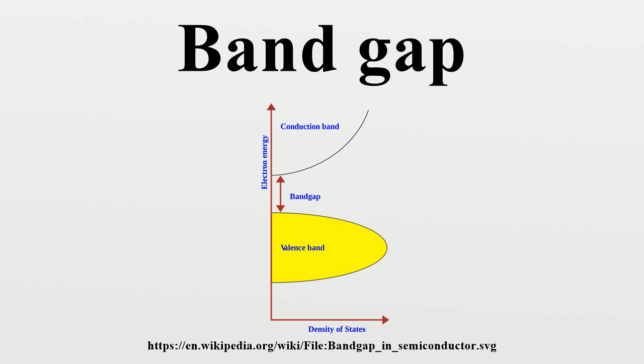In contrast, a material with a large band gap is an insulator. In conductors, the valence and conduction bands may overlap, so they may not have a band gap.